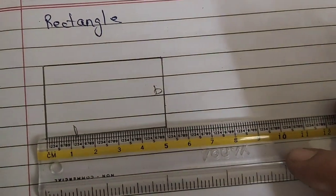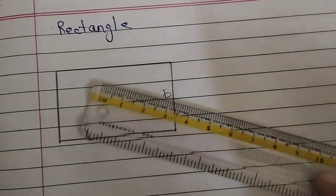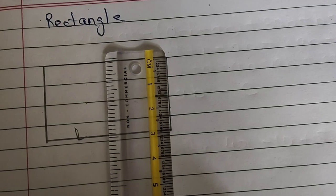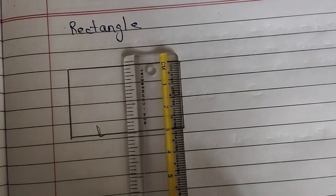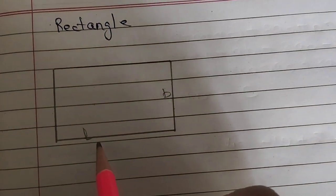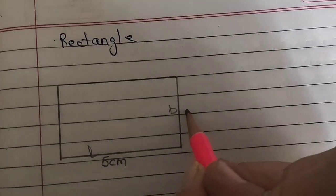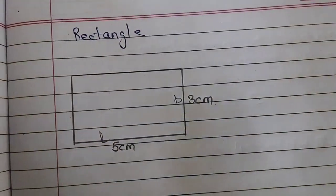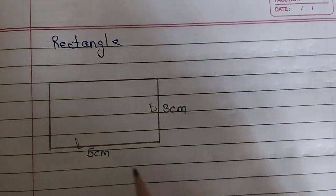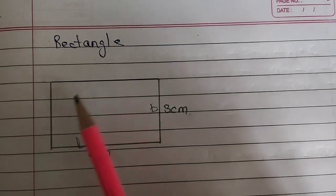The length of this rectangle is 5 cm and the breadth of this rectangle is 3 cm. The area of an object is the space occupied by that object.